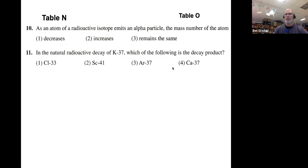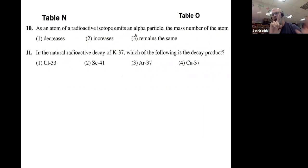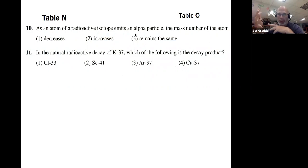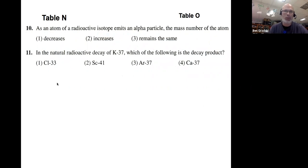Number ten: as an atom of a radioisotope emits an alpha particle, its mass number does what? If a radioactive isotope emits an alpha particle, it's losing four atomic mass units — we say AMUs because they're not grams. A neutron and a proton have about the same mass; we give them each one AMU. An electron is about 2,000 times smaller, so it's insignificant and rounds to zero. If you lose four nucleons — things in the nucleus — each with the same mass, the mass number of the atom must decrease.